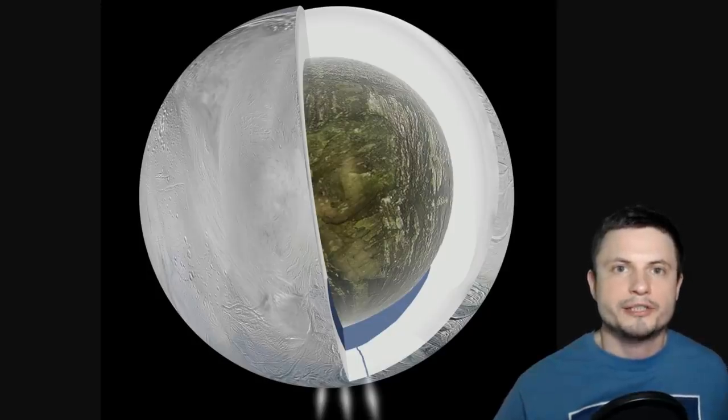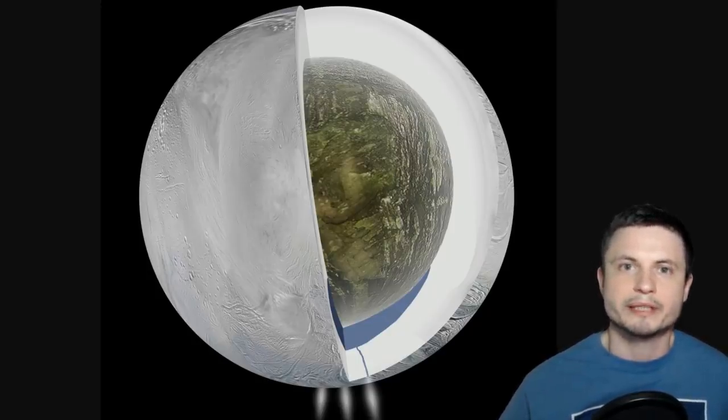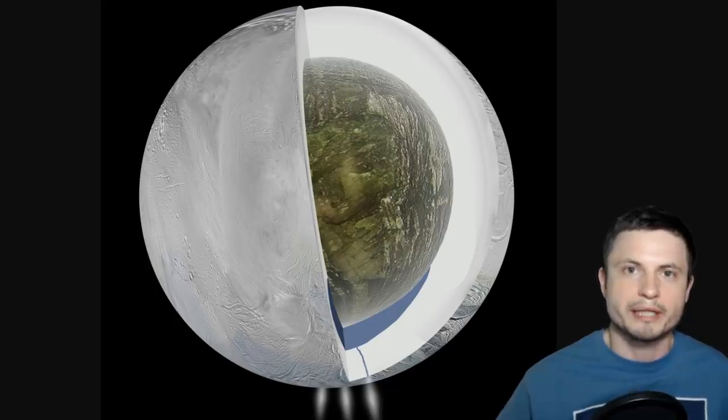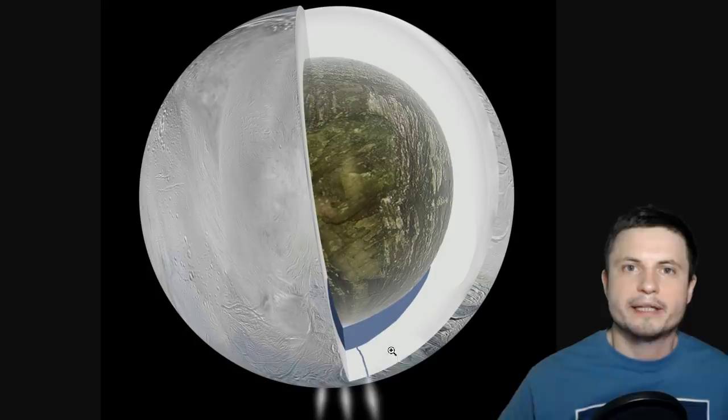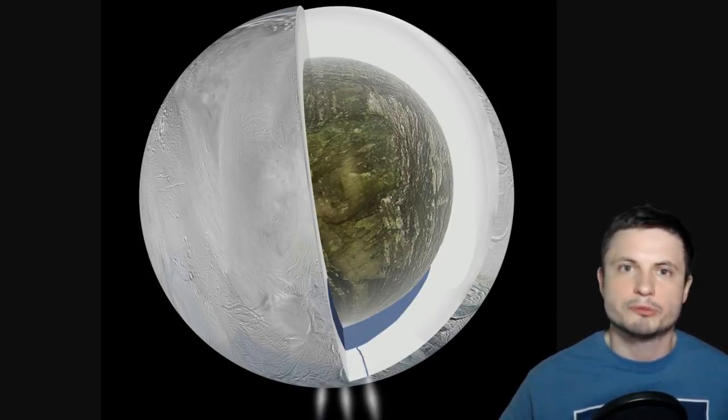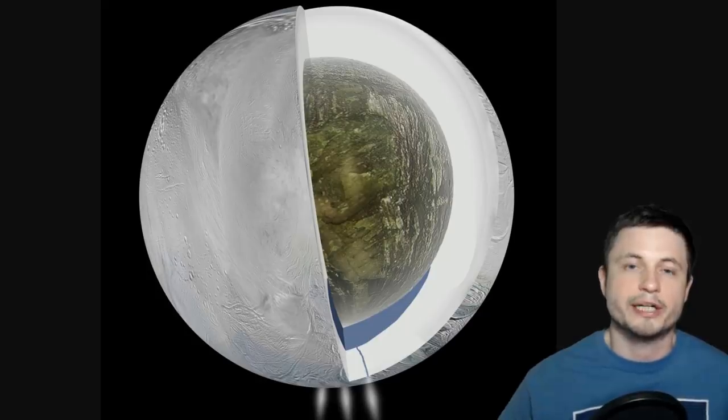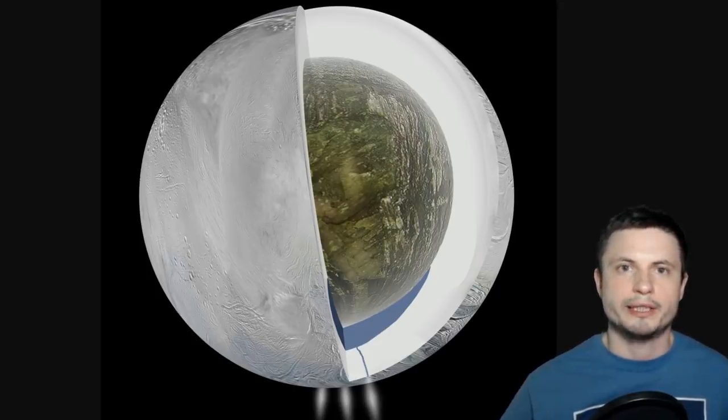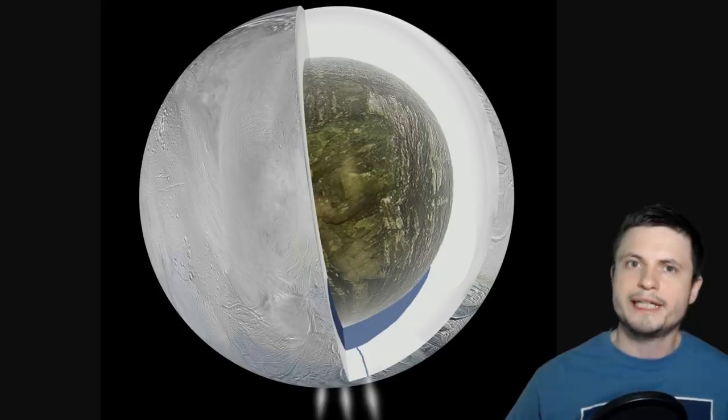And the current models suggest that Enceladus may look something like this on the inside. This was made by NASA when all of this was discovered. So we think that there's a pretty thick layer of ice, then there is the liquid ocean, and then there is some kind of a rocky, very likely terrestrial core that's relatively small in size but nevertheless is there and is responsible for all of this activity. And for all we know, on the actual surface of that rocky inside is maybe where we can find some unusual Enceladian life.